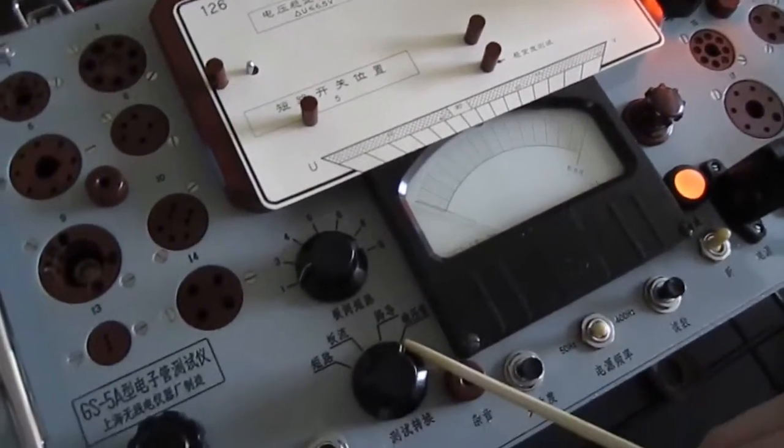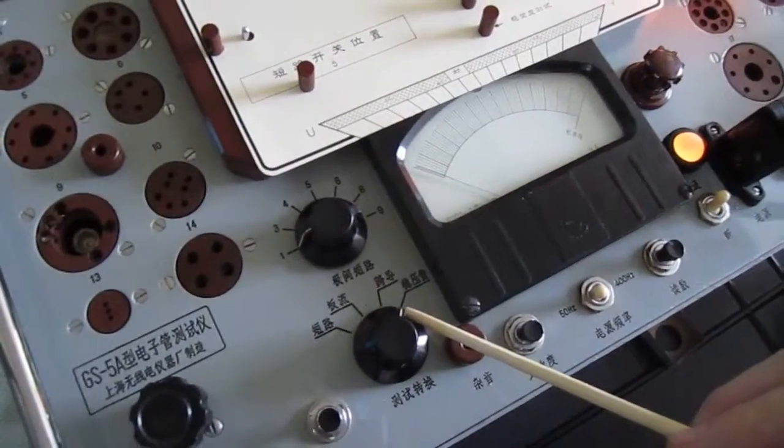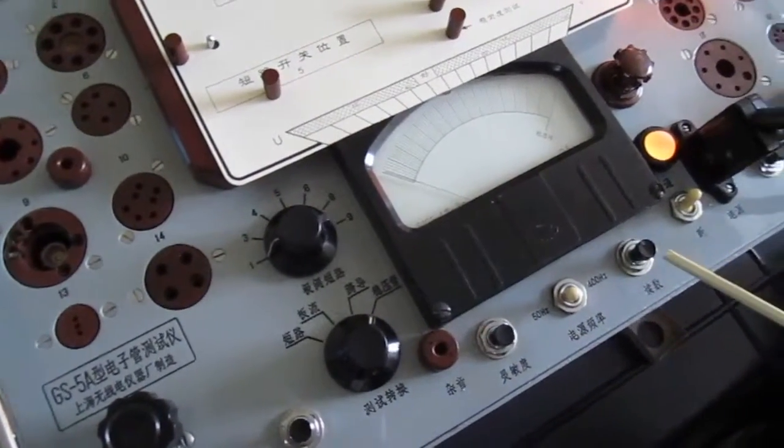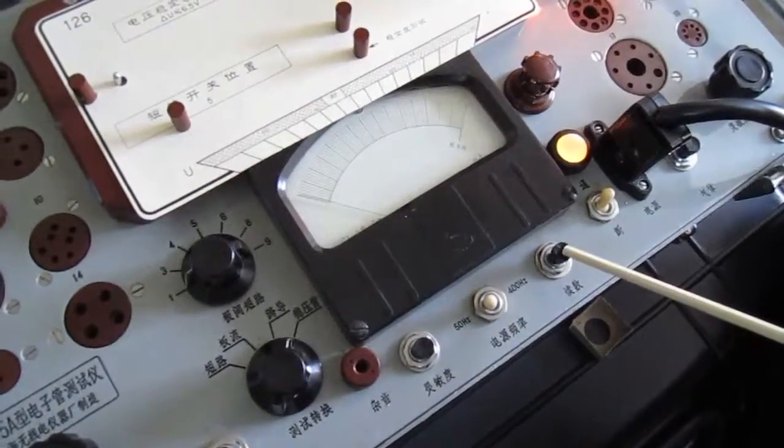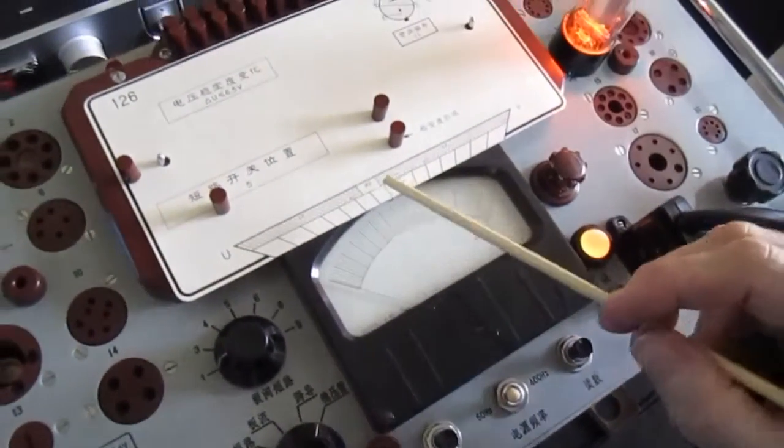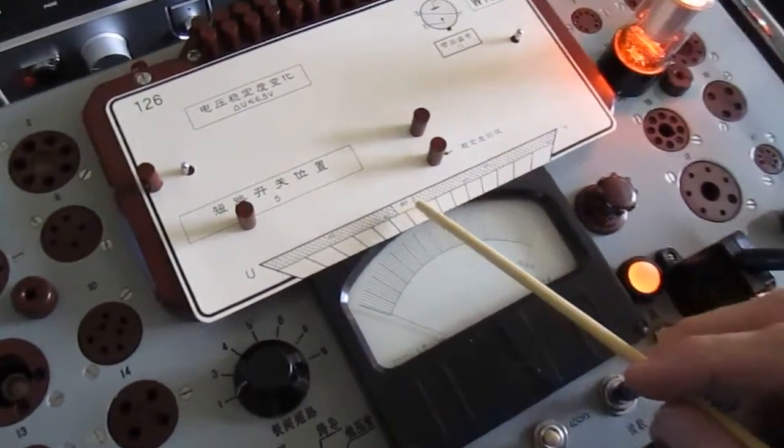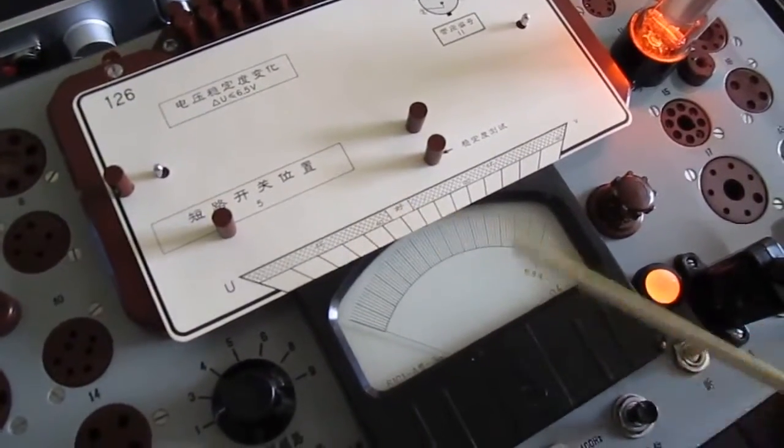This is the setting on the GS5A for the voltage check for the regulator tubes. This is the button we push for test. And we want to make sure that we're within this band right here for a good tube.